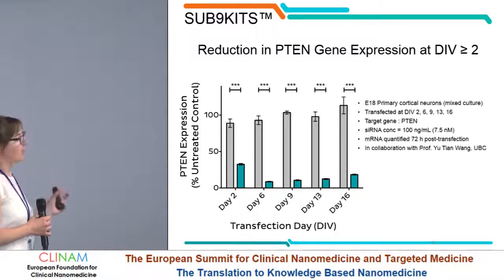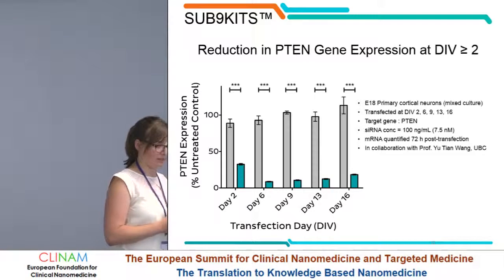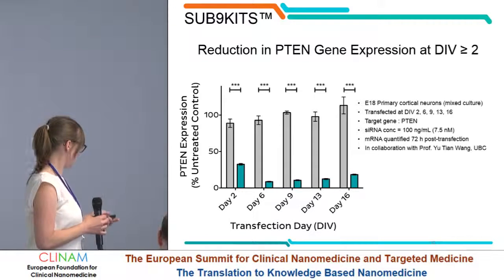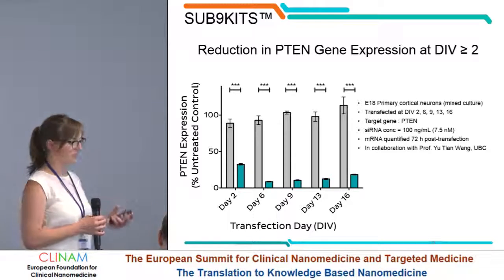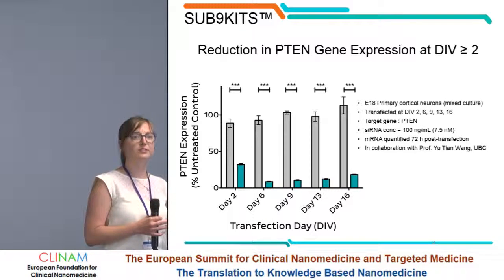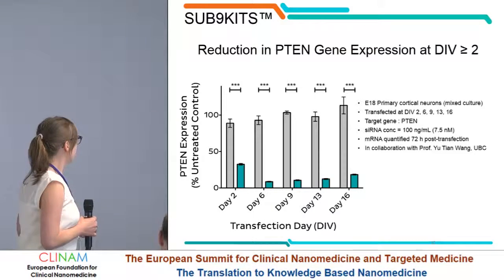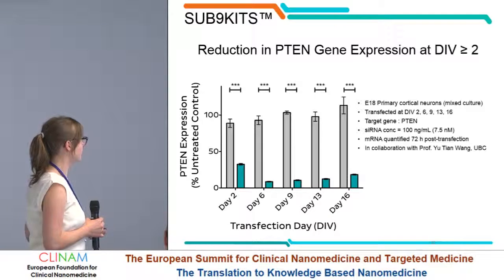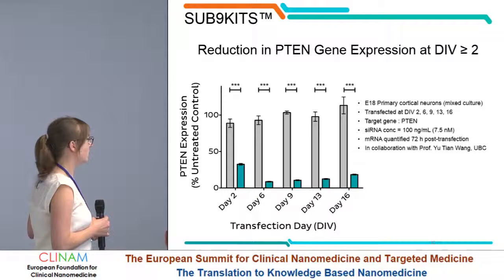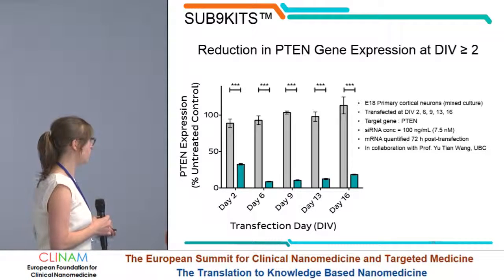One point with primary cells and stem cells is that it is very hard to transfect at early stages. Usually you want cells to settle in the petri dish before transfecting — typically at in vitro day 13 or 14. Here we show that because the mechanism is not toxic and very active, you can start transfecting your cells at even day two and achieve efficient gene knockdown up to day 16.